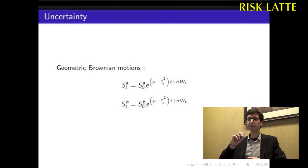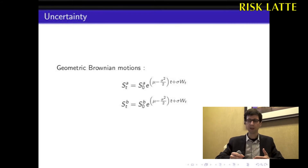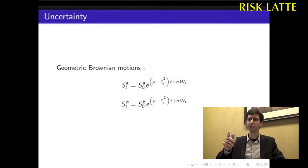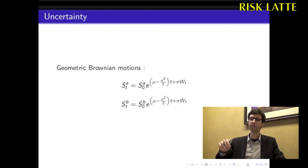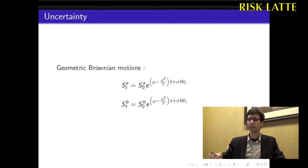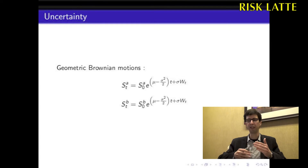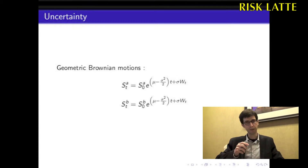First, we model the uncertainty with two geometric Brownian motions. The geometric Brownian motions share the same parameters for the drift and diffusion, but they differ in their initial values. We set S0A greater than or equal to S0B in order to have a positive bid-ask spread. This is for the uncertainty.